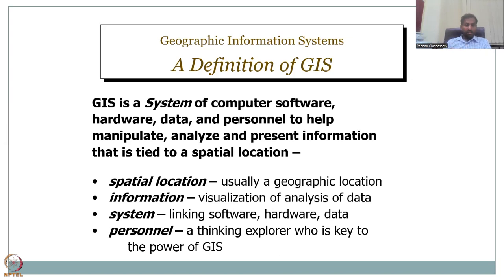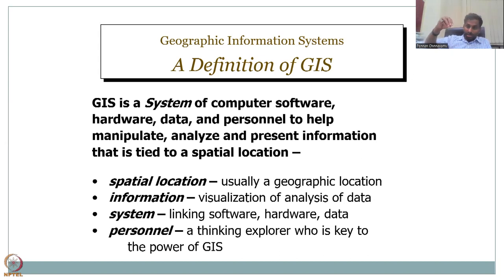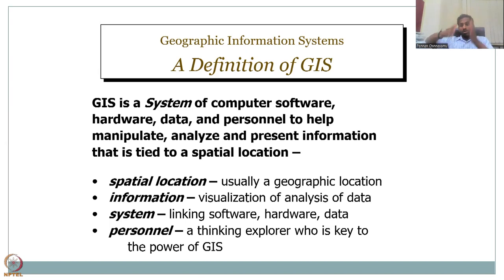Spatial location is a geographic location. Chennai is a city, it's a location, it has latitude. If I pin data to Chennai, it is anchored in Chennai. Information is the visualization or analysis of data — you are visualizing data in GIS, put as maps, not as tables. The system is what links everything together — software and hardware. And the person, as I said, is us who are learning and using GIS.